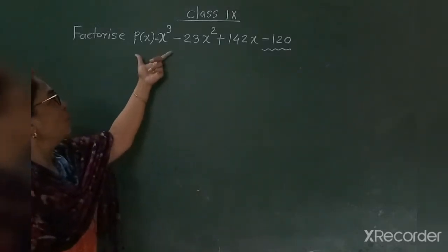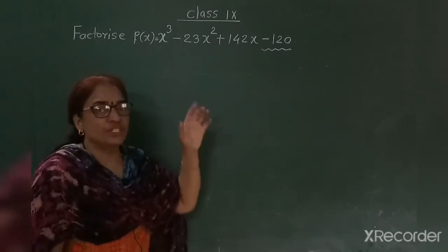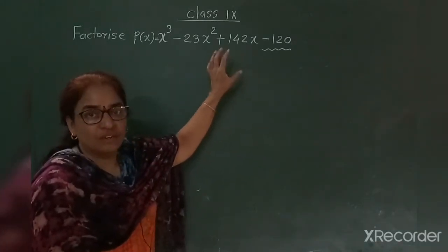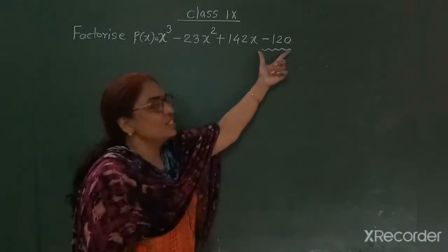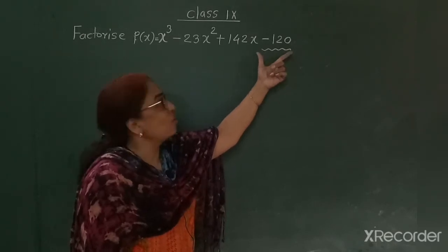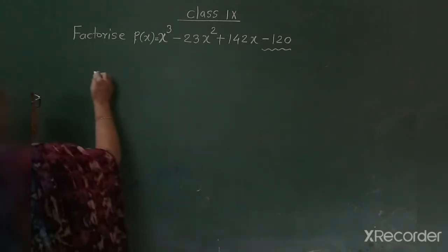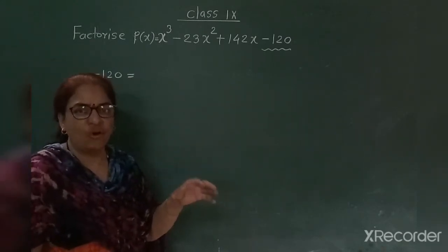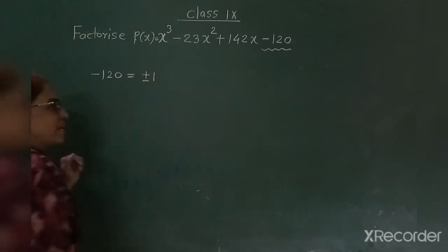Good morning students. Today we are going to factorize this cubic polynomial. You have to follow some steps. Step number one is to identify the constant term from this cubic polynomial. The constant term is minus 120 — it is called a constant term because there is no variable in this term. Now identify the constant term and write all its possible factors.